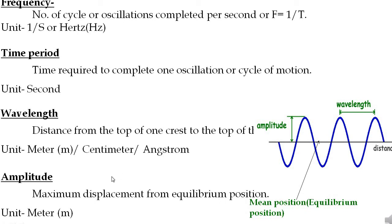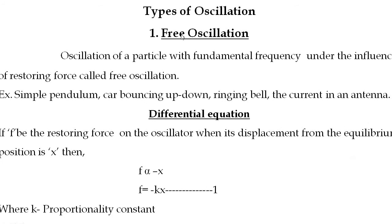Amplitude is the maximum displacement from the equilibrium position — that is, the mean position. The maximum distance from the mean position is called amplitude. Amplitude is measured in meters.